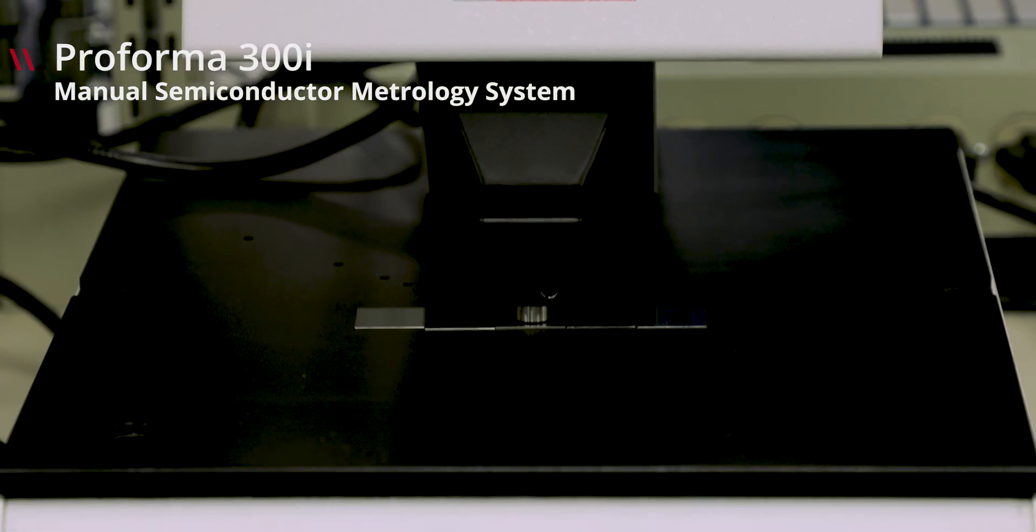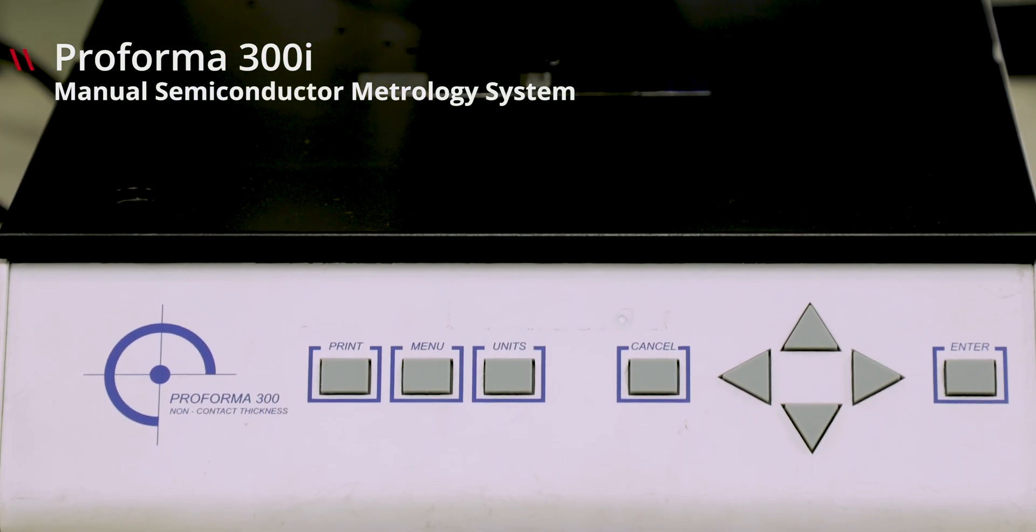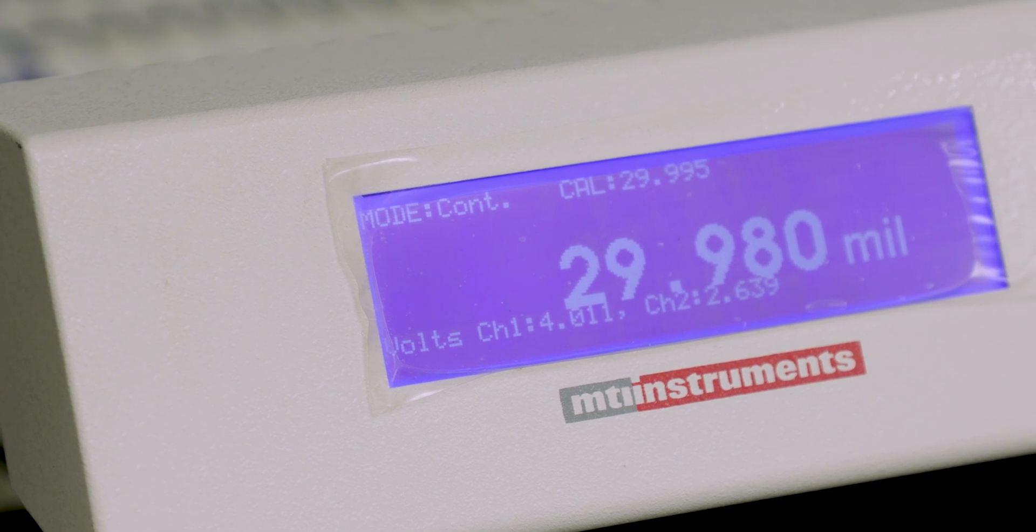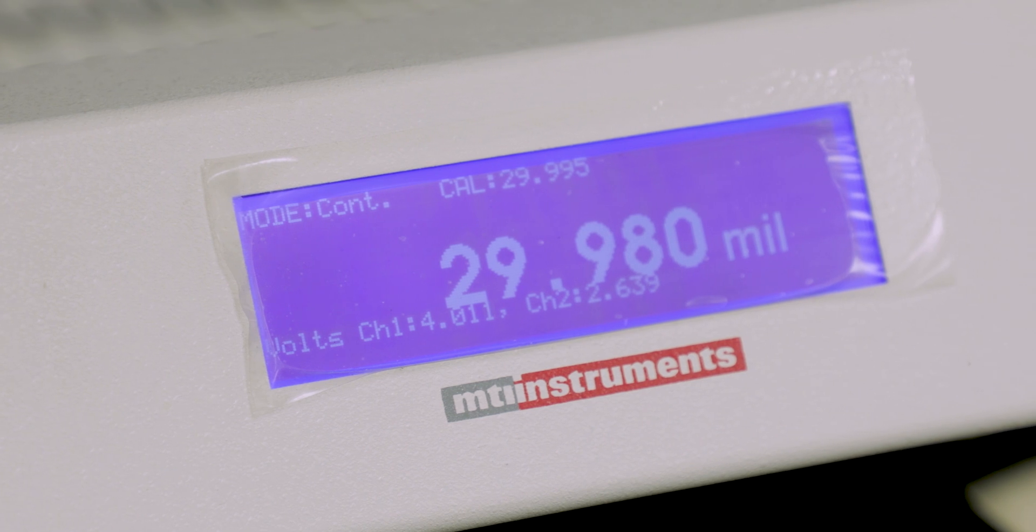The Proforma 300i is a manual wafer inspection system serving as a more cost-effective alternative to an automated solution. It provides excellent accuracy and repeatability, with full remote control operation and an ethernet network interface.